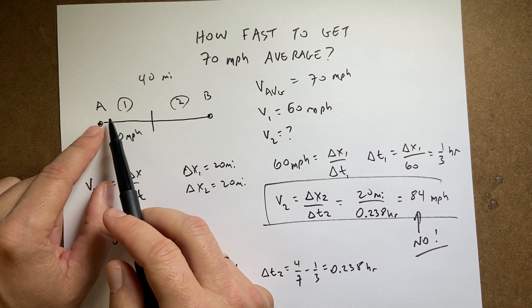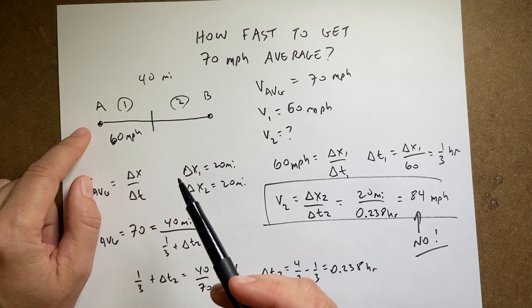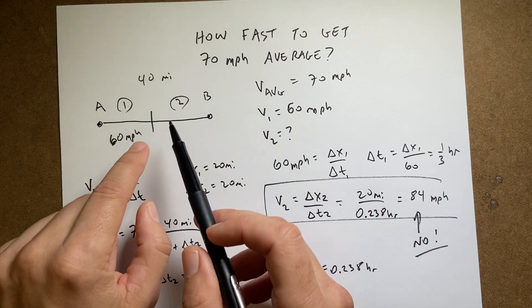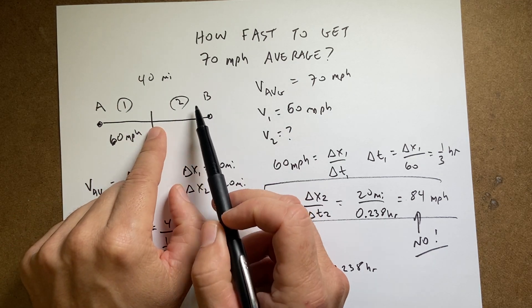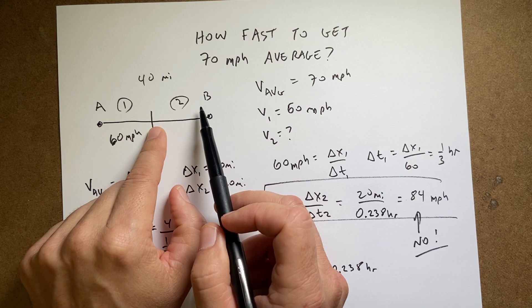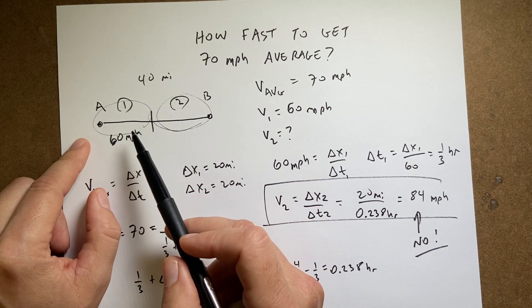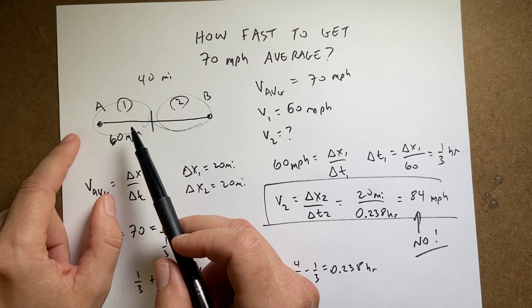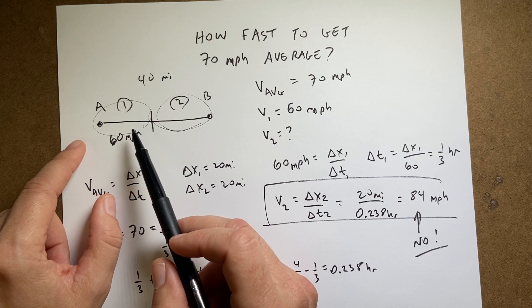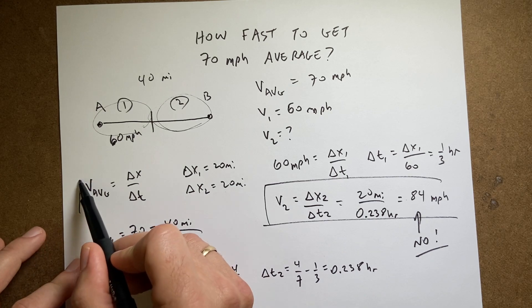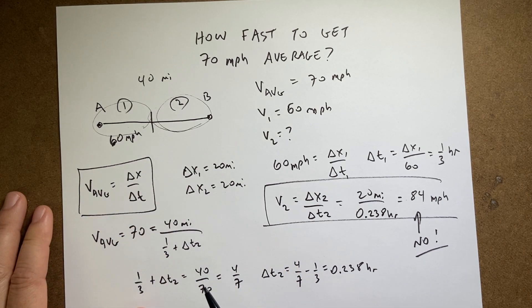So if you think about the average velocity, you can't just add them because it has to do with times, right? And I'm going to have to go faster than 80 miles per hour because the time for this part is a lot less than the time for that. They're not split up equally in time. Just because they're split up equally in distance does not mean they're equal in time.